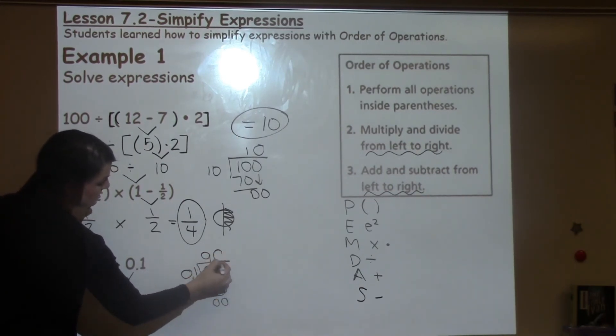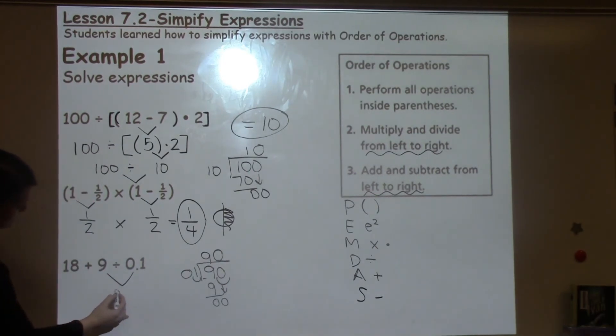1 goes into 0, 0 times. So this would be the same as 90. I've taken care of these numbers, so now I just dropped down what I still have left, to be 18 plus 90.